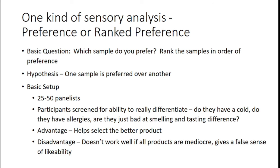The key hypothesis is which sample is preferred over the other. Typically 20 to 50 panelists, with similar screening. It's helpful from a stage-gating perspective to know which to move forward, but it doesn't work well if both products are mediocre — it gives a false sense of likability. You might rank-prefer the cookie with chocolate chips, but if it tastes like cardboard and the other like armpit, it's still a bad product.